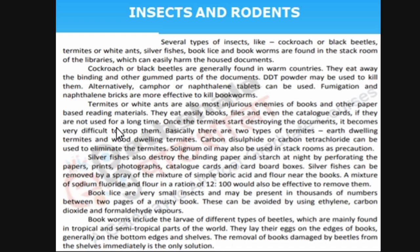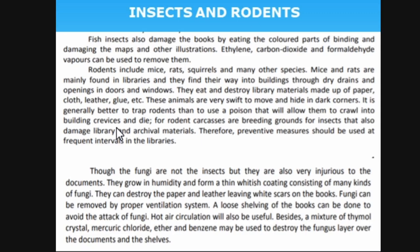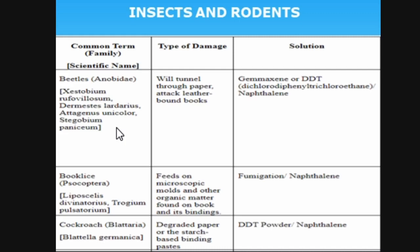Rodents such as mice, squirrels, and rats — if they come into the library, they will definitely harm the books. Fungi, though not insects, are injurious to documents. They grow in humidity and form a thin whitish coating. In a historical library you will definitely face this issue. For beetles, they tunnel through paper putting holes in it. Solutions like Gammaxene, DDT solution, or naphthalene balls are used to remove them.